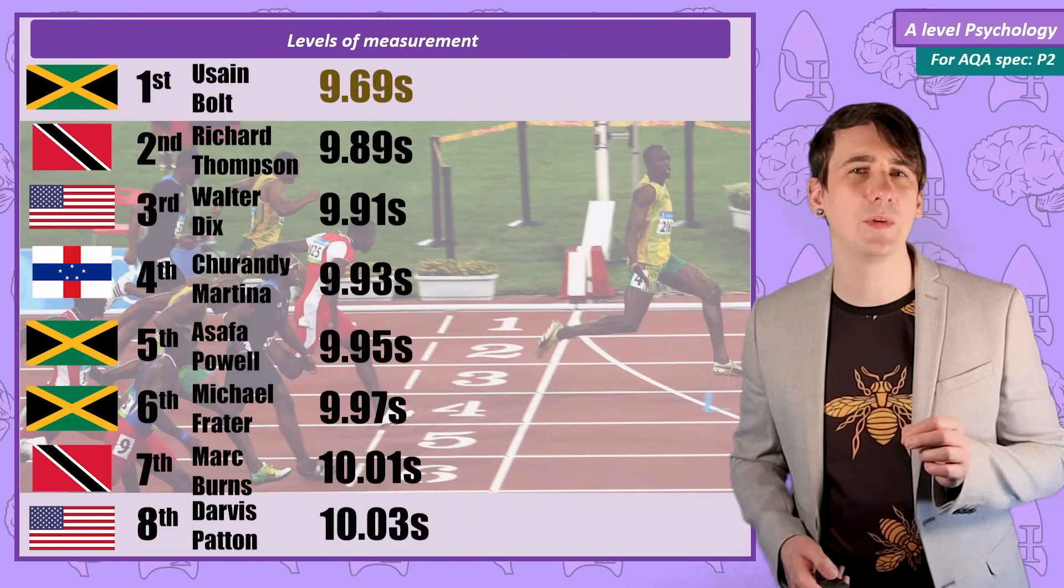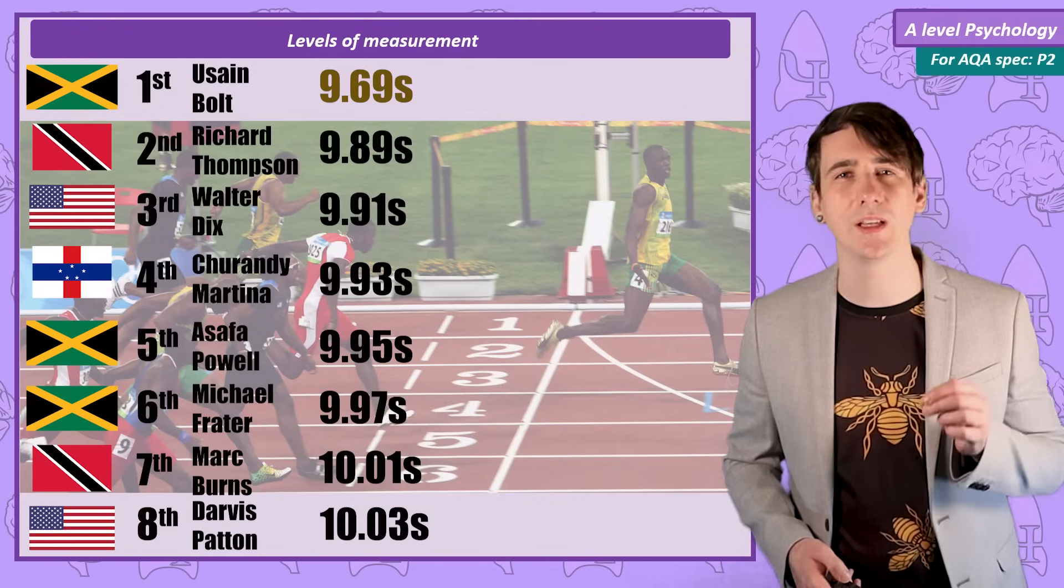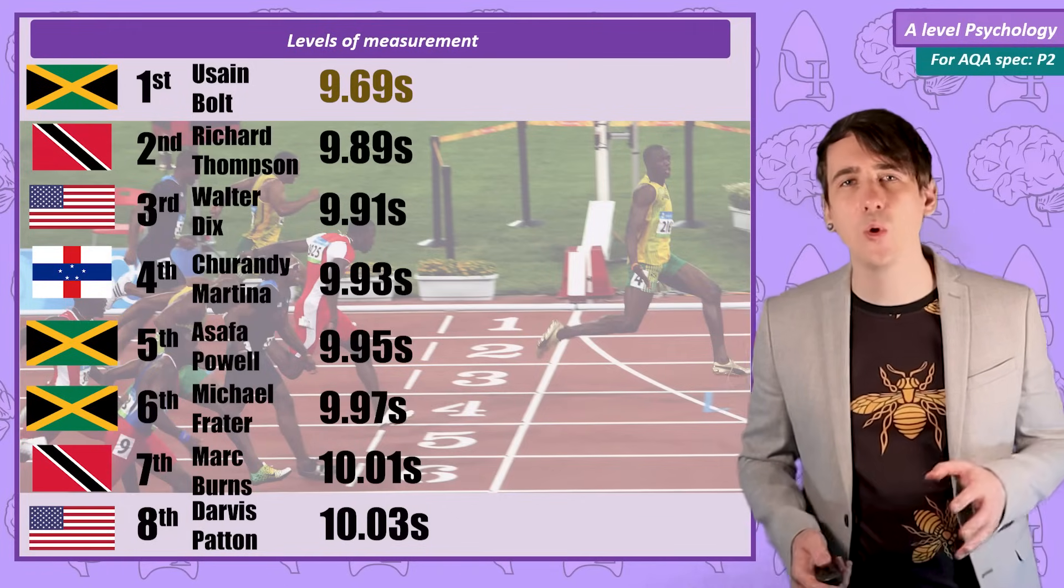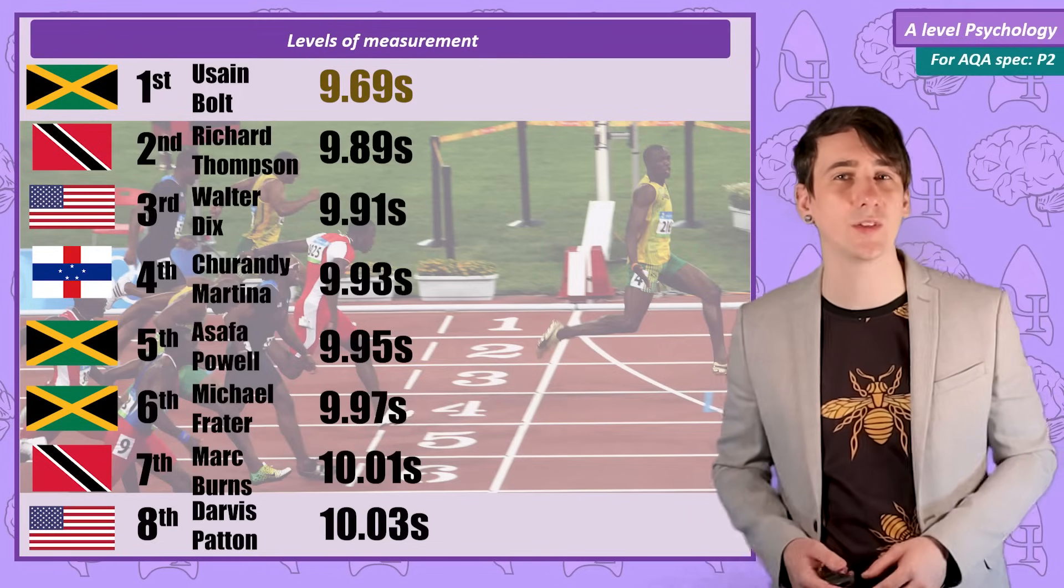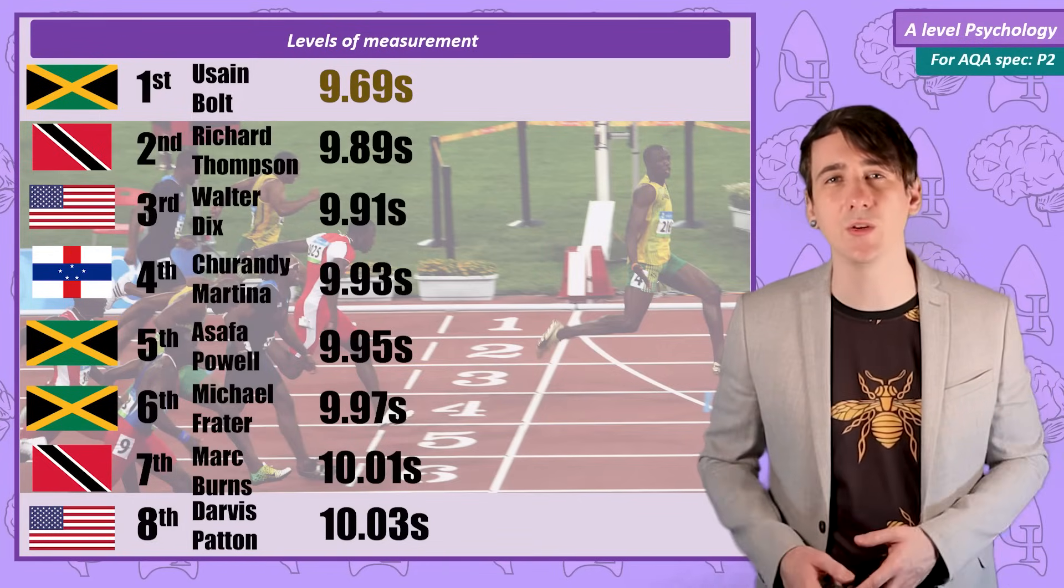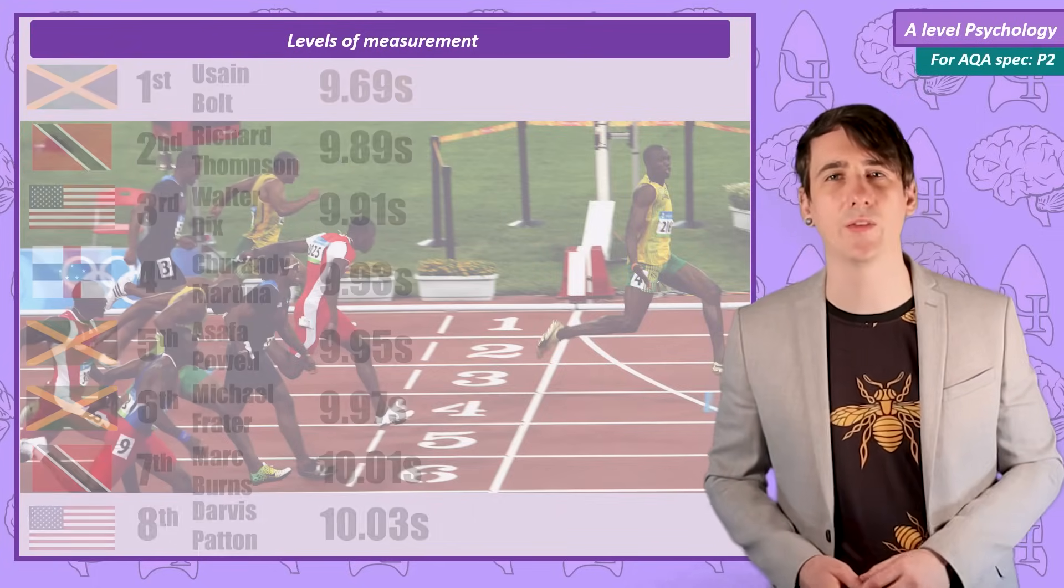Using interval data to record the time each runner finished the race we can see the difference between Usain Bolt and Richard Thompson is two tenths of a second. Whereas the difference between Asafa Powell and Michael Frater is only two one hundredths of a second. So our interval, in this case ratio data, give us much more detail, a more precise story of the race.